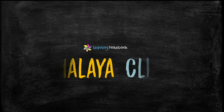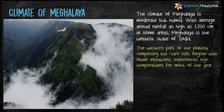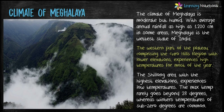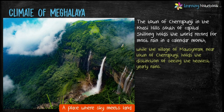Next is the climate of Meghalaya. The climate of Meghalaya is moderate but humid, with average annual rainfall as high as 1,200 cm in some areas, making Meghalaya the wettest state of India. The Shillong area experiences low temperatures — the maximum temperature rarely goes beyond 28 degrees, whereas winter temperatures of sub-zero degrees are common.